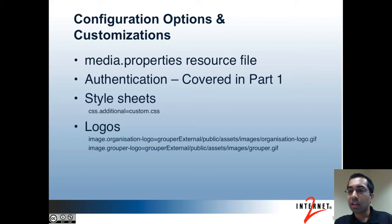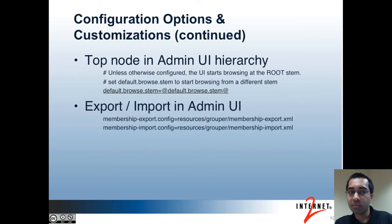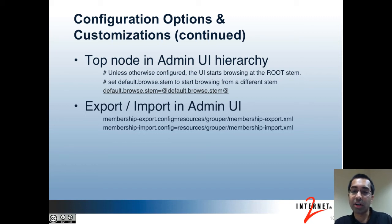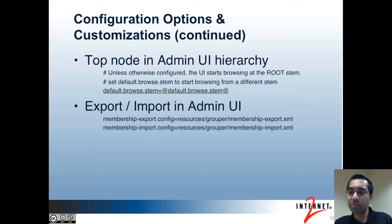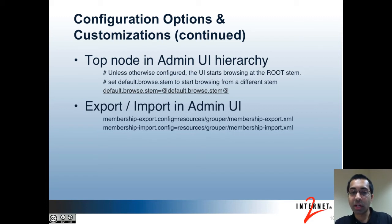Since the admin UI allows you to navigate the entire hierarchy of Grouper, you can specify the top node in the hierarchy if you want to limit the browsing users can do to a subset. If you want to enable membership export and import in the admin UI, you can uncomment the two lines shown in the configuration. The light UI allows membership export and import by default. As far as these two XML files, you'll probably need to modify those as well to include the subject source names that you're using.